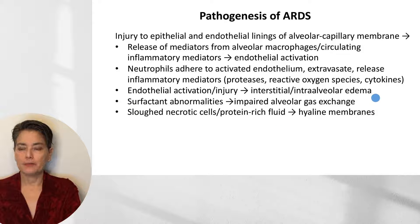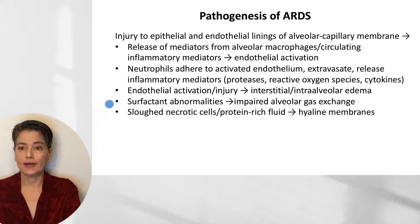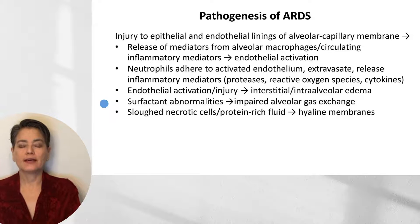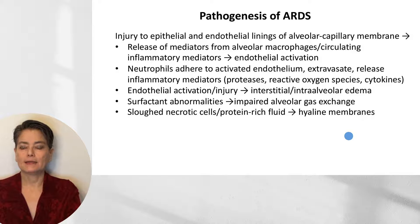With endothelial activation and injury, we get edema — interstitial or intra-alveolar. Simultaneously, surfactant levels decrease either because injured type 2 pneumocytes aren't producing surfactant, or because proteases released into the alveolus destroy and inactivate it. Either way, surfactant abnormalities lead to impaired alveolar gas exchange. The lungs become stiff and require high pressure to open. Sloughed necrotic cells and protein-rich edema fluid again form hyaline membranes.